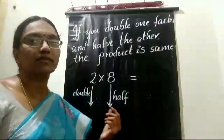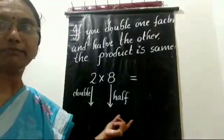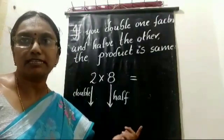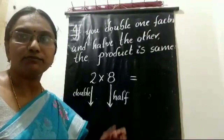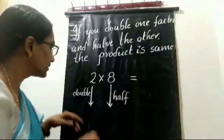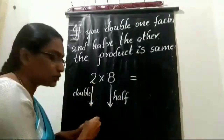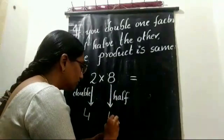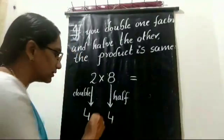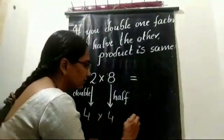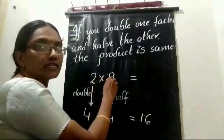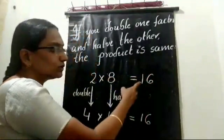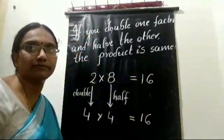Let us see a few multiplication facts. Here is a strategy: double one factor and make half of another factor, then multiply. The product obtained is equal to the product of the given numbers. For example: double 2 to get 4, and half of 8 is also 4. Multiply 4 by 4: 4 fours are 16. And 2 into 8 is also 16, so both answers are the same.